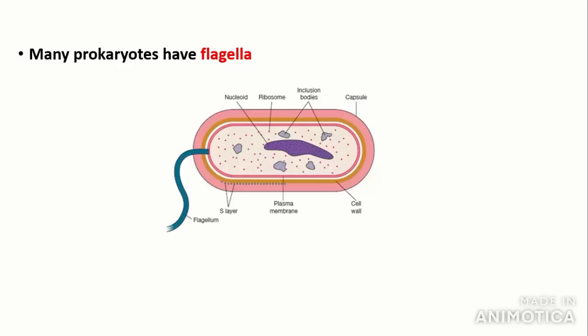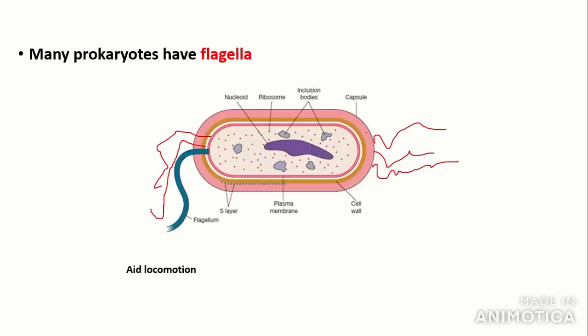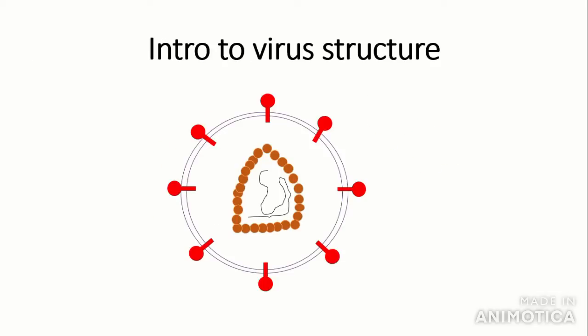Many prokaryotes have flagella. This particular bacterium here only has one flagellum, but many bacteria often have lots of flagella. Some even have flagella pointing at the front, called anterior flagella, but you don't need to worry about that. The main function of flagella is to aid locomotion, allowing them to spread more easily.